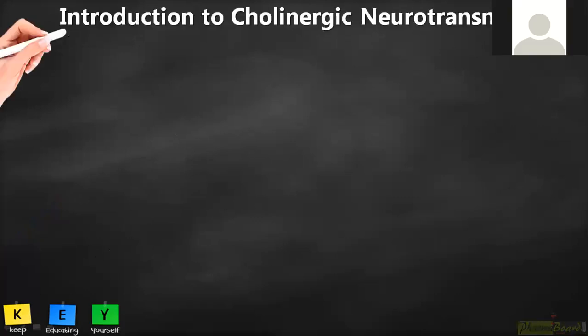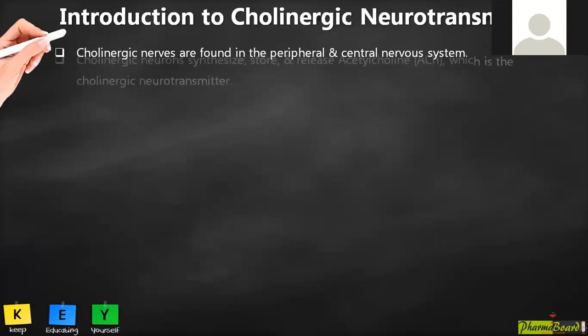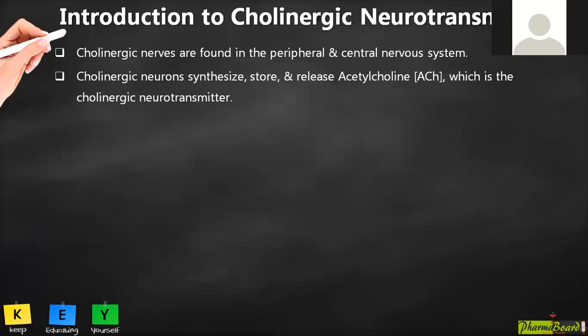Cholinergic nerves are found in both the central nervous system and peripheral nervous system. Cholinergic neurons synthesize, store, and release acetylcholine — abbreviated as ACh. Acetylcholine is the only main neurotransmitter present in the cholinergic system.